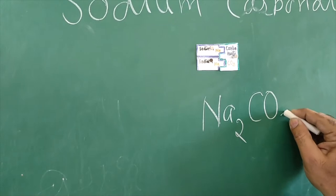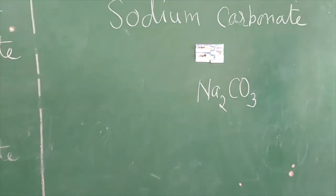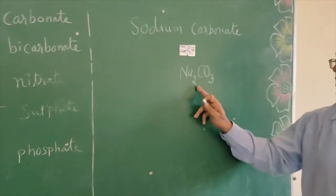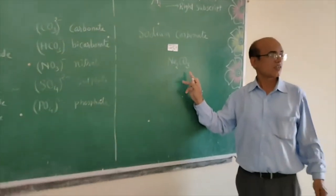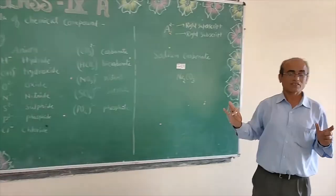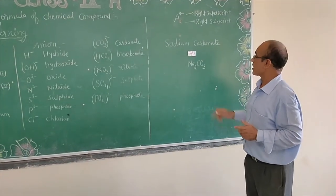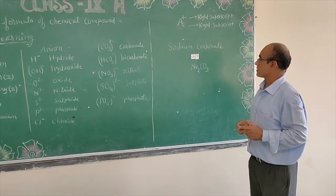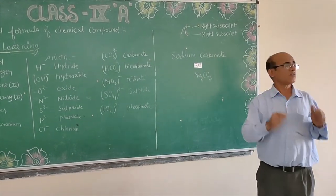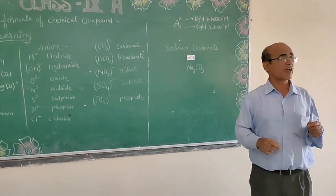Now you can write the formula. How many sodium? There are two sodium. And one carbonate. Carbonate I have written one time. So this will be Na2CO3. Easily I have written formula of sodium carbonate.